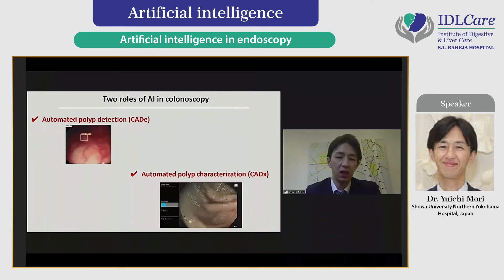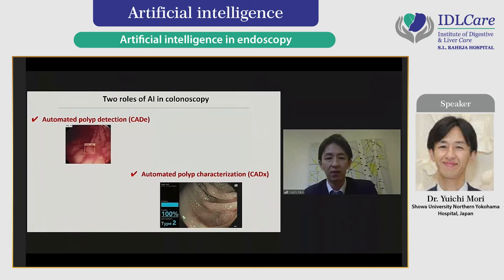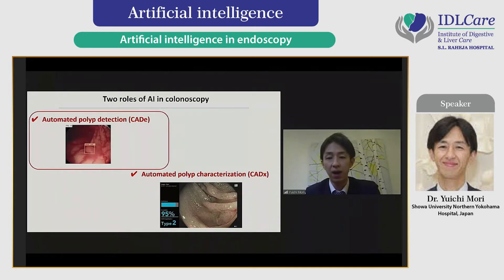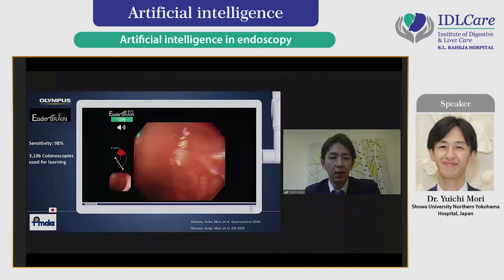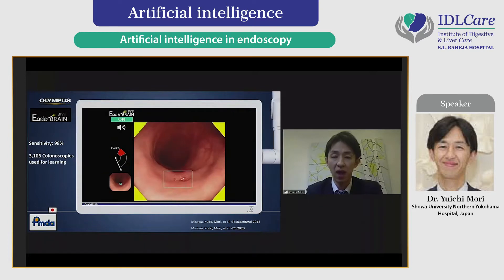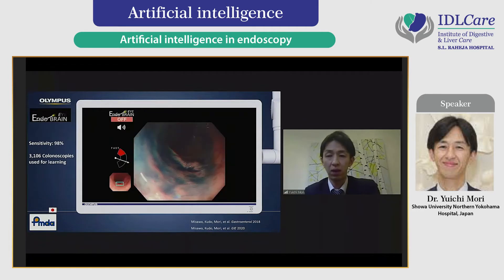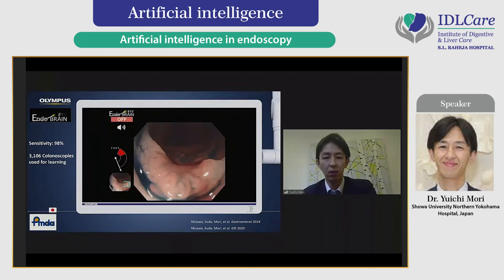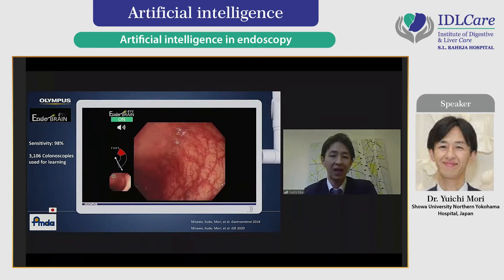To cover these drawbacks, we are applying AI technologies into colonoscopy practice. This technology is divided into two categories: detection and optical diagnosis. Let me talk about detection first. This device provided by Olympus Corporation demonstrates automated detection of depressed areas in colonoscopy images. This lesion was proved to be a cancer embedding into the submucosal layer. This kind of technology is useful not only for adenoma detection but also for cancer recognition.